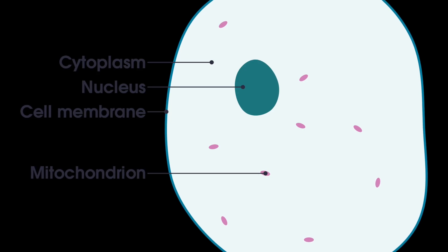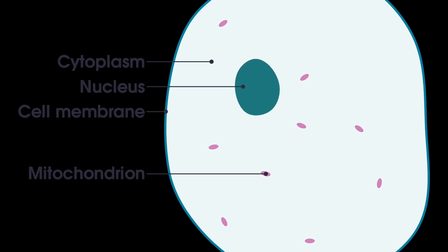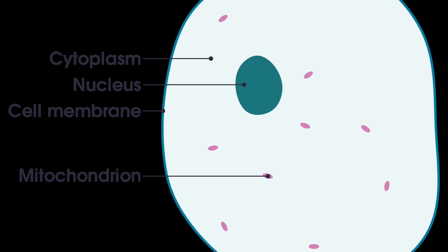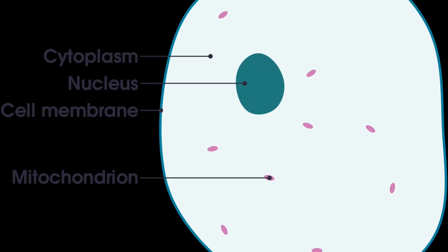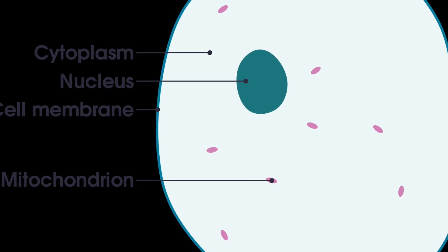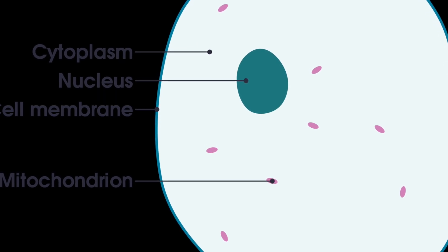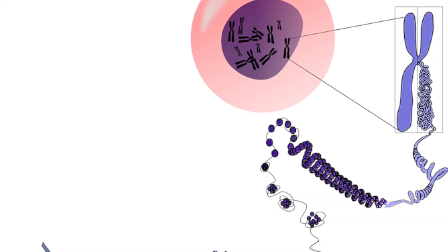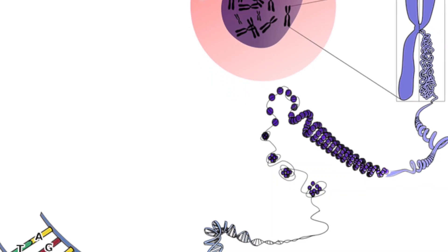In this video we're looking at mitosis and differentiation. Cells have a nucleus that contains chromosomes, and chromosomes carry genes that contain instructions for making new cells. You have 46 chromosomes in the nucleus of body cells, and these are arranged in 23 pairs.